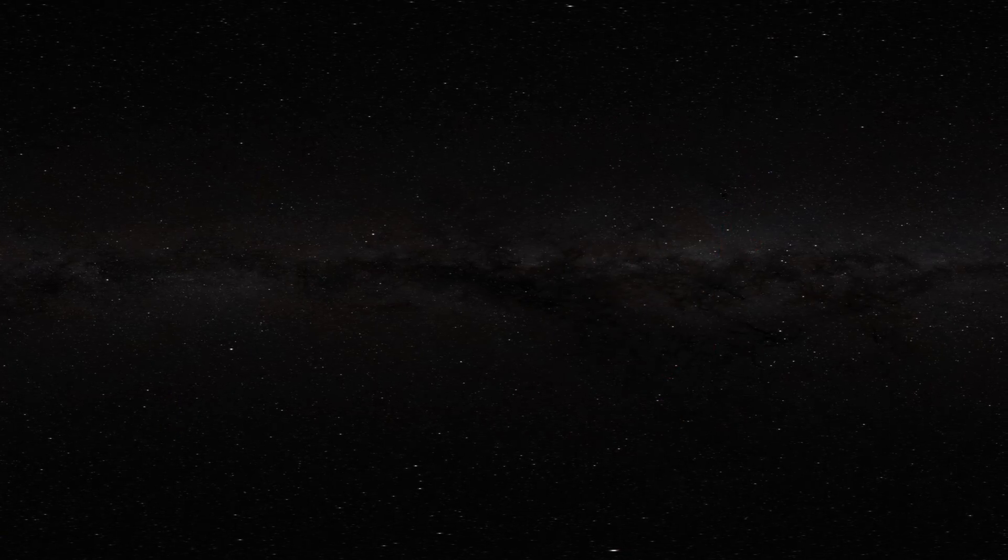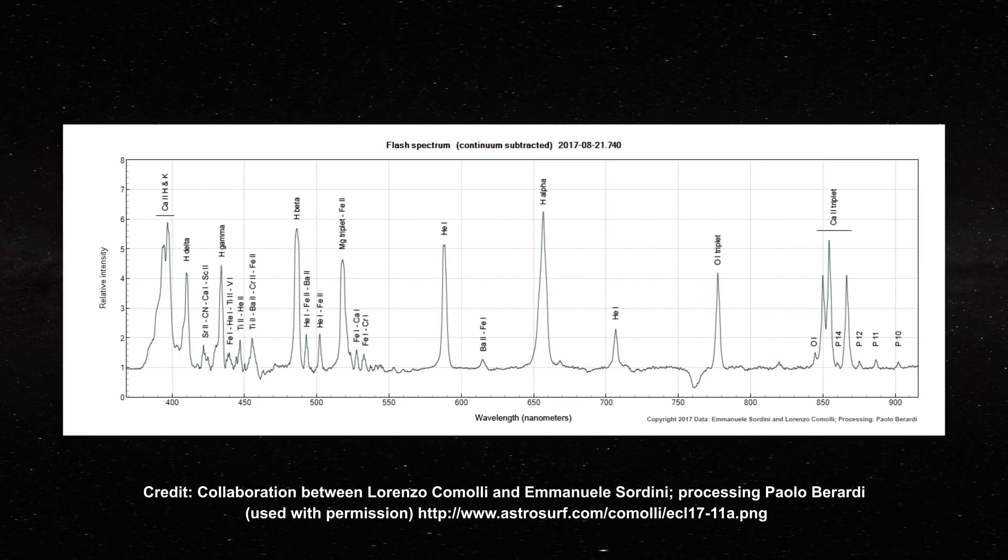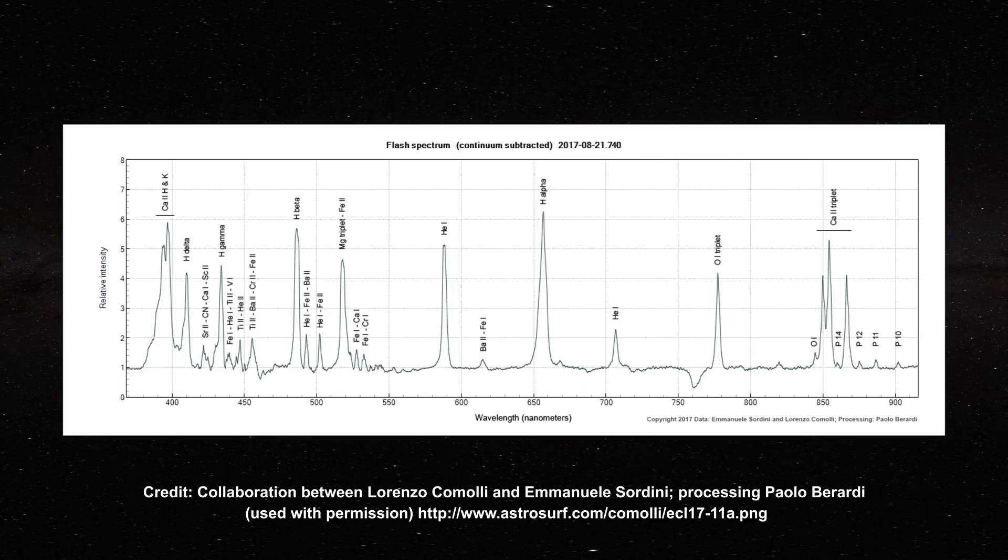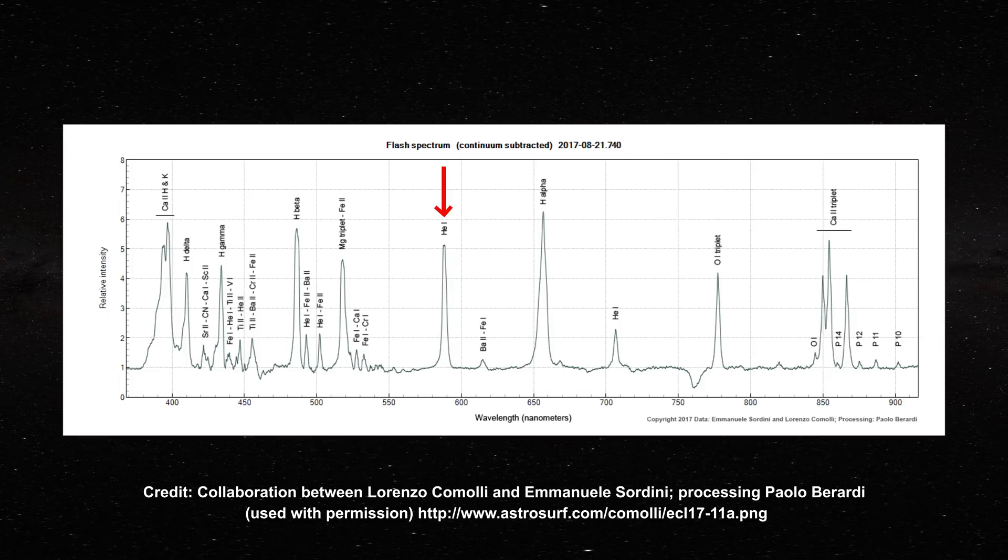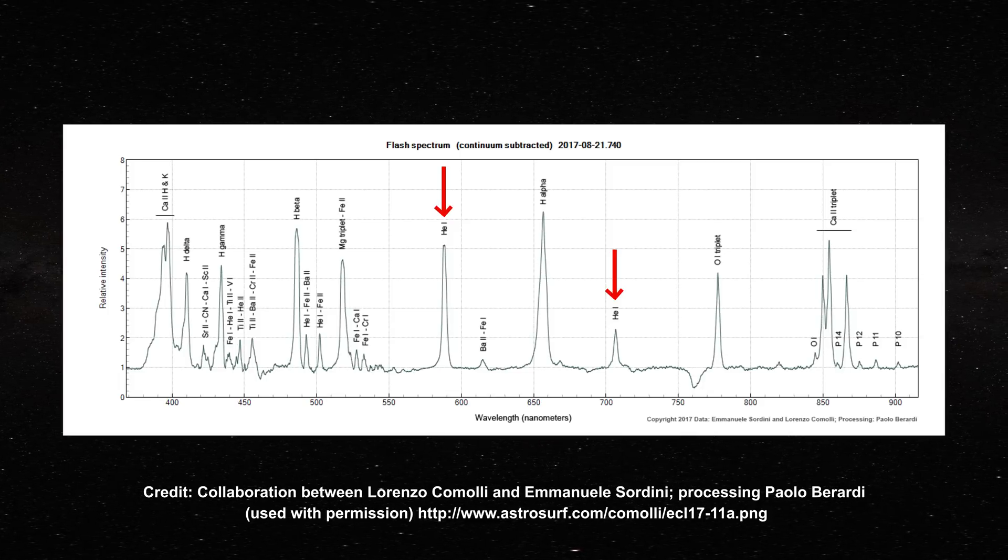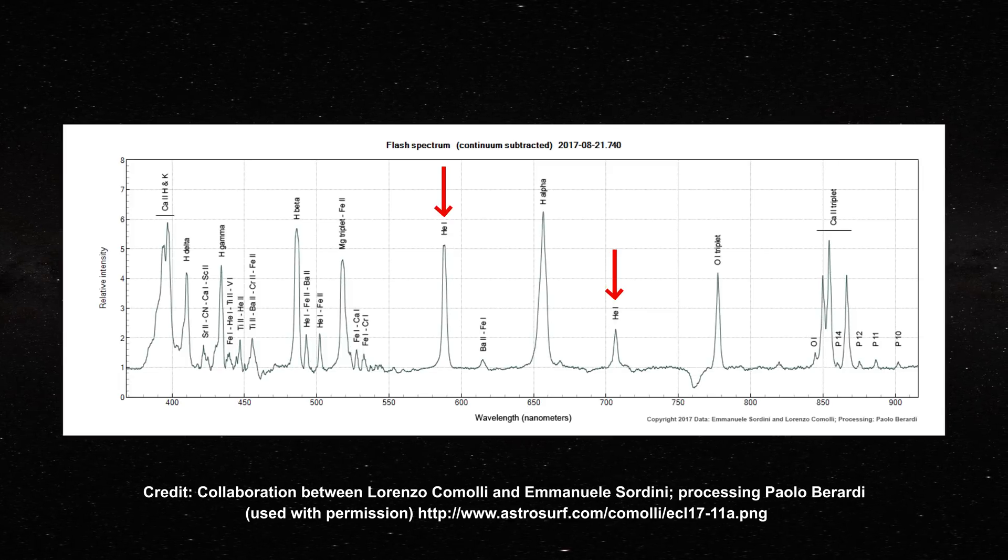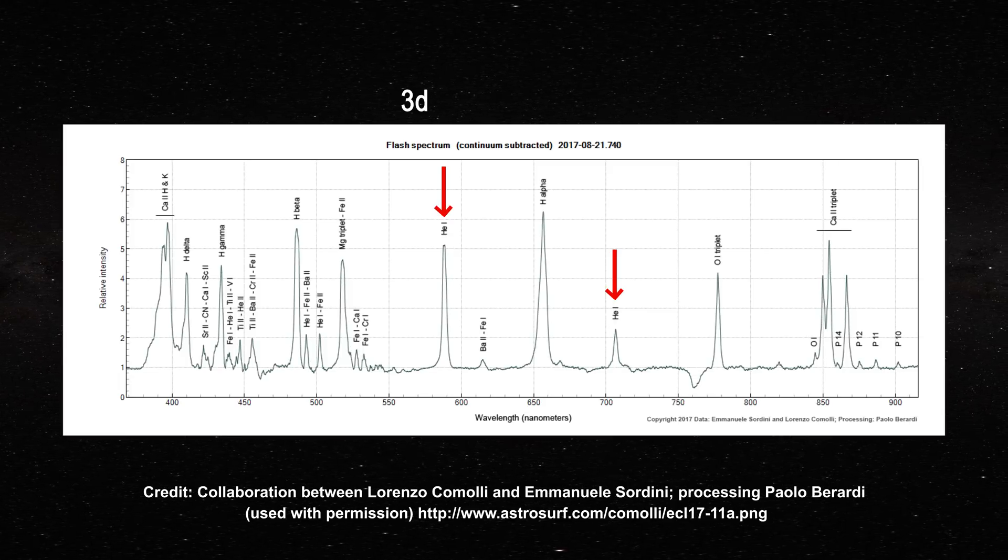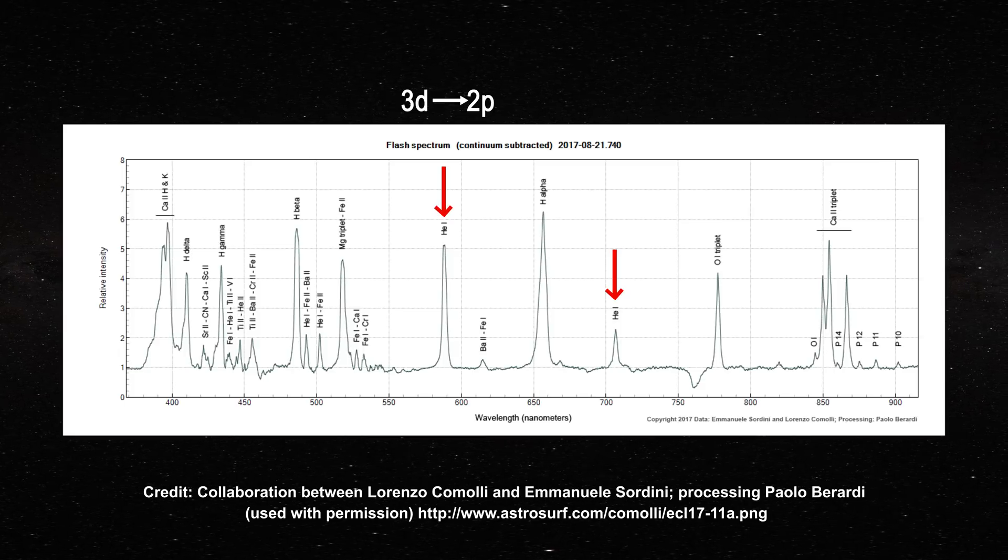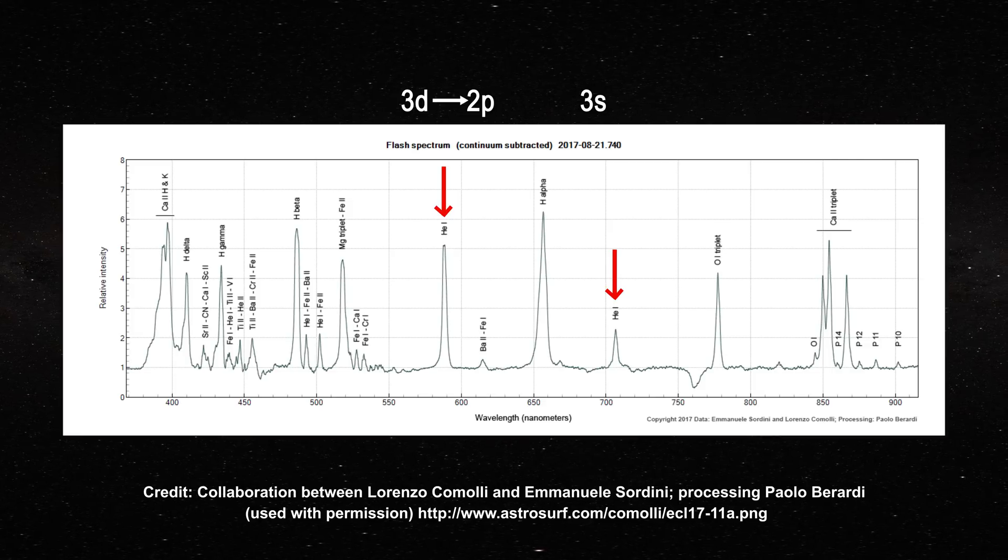Now, let us finally consider the chromospheric spectrum. In this spectrum, you can see two readily observable helium lines. They occur at 587 and 706 nanometers. Both of these lines are very strong. They correspond to triplet transitions. The 587 line comes from a transition from an electron from the 3d to the 2p level. The 706 nanometer line comes from a transition from the 3s to the 2p level.